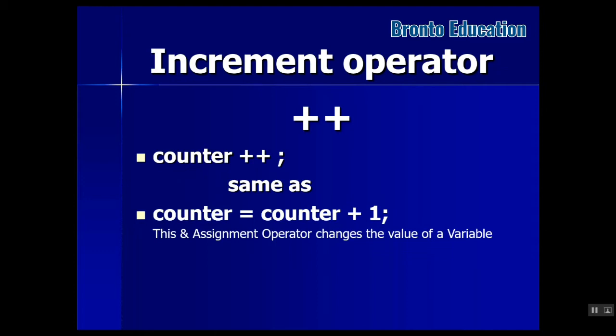In the increment operator, we have one variable which is counter, and plus plus is the increment operator which increases the counter value, which is an integer, by one. For example, counter might be 10, when you use counter plus plus it will make it 11. This is actually the same as counter equals counter plus one, but it takes too much time for a computer. Counter plus plus just increments it by one, which is more efficient.